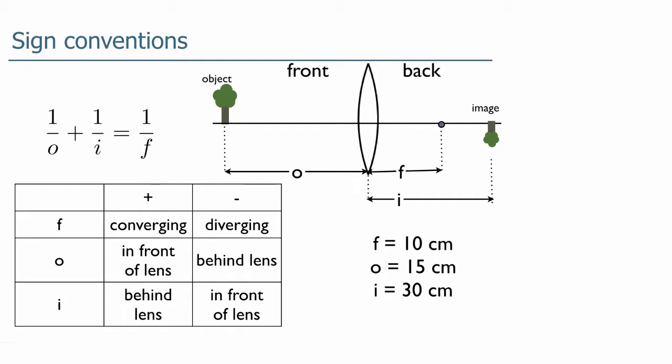It's not drawn completely to scale given these numbers. If F, the focal length, is positive, that means we have a converging lens. If it's negative, it's a diverging lens. O, if it's positive, means the object is in front of the lens; if negative, it's behind the lens. If you have two lenses, you'd use the thin lens equation twice — the image of the first lens becomes the object for the second lens, so the object can be a virtual object.